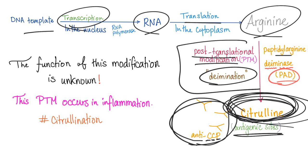These antibodies are called anti-cyclic citrullinated peptide, because we are talking about proteins here. As for the function of this modification — i.e., citrullination — we don't know.